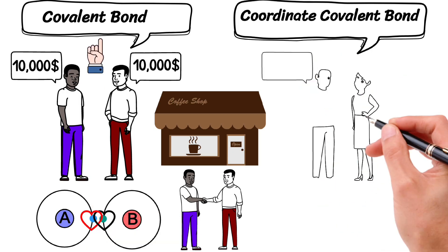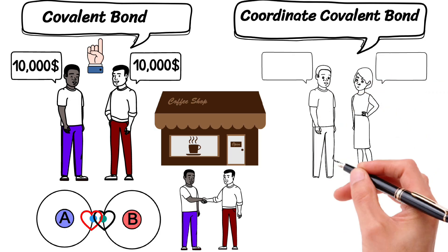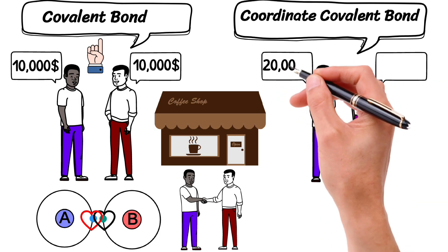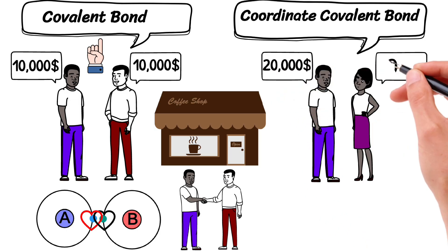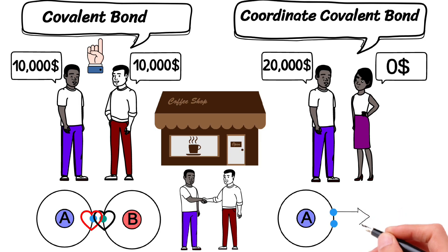In another case, one friend offered to invest all of their savings into the coffee shop while the other friend does not contribute any money into the business. So a coordinate covalent bond is formed when only one atom contributes its both electrons while the other atom accepts the electron.